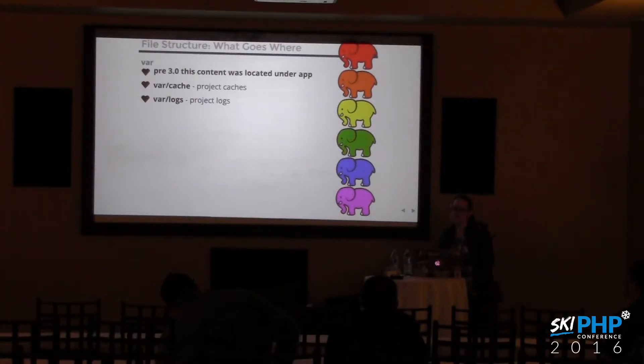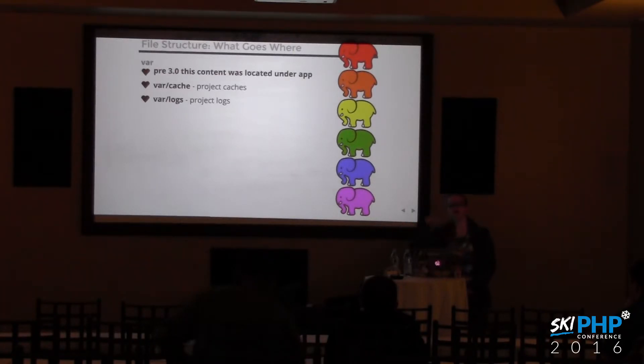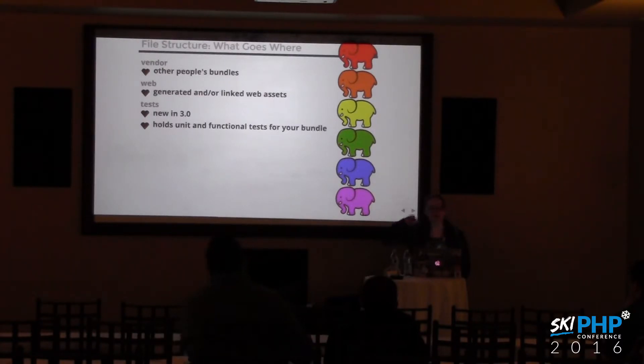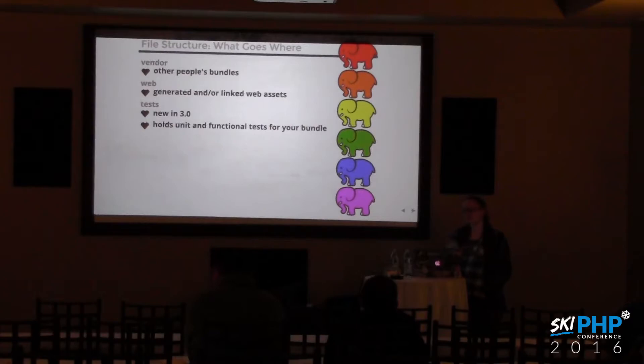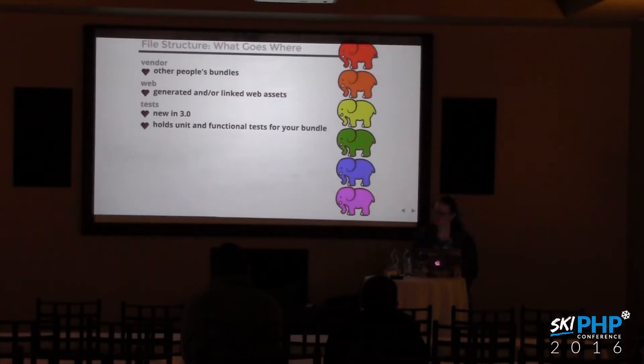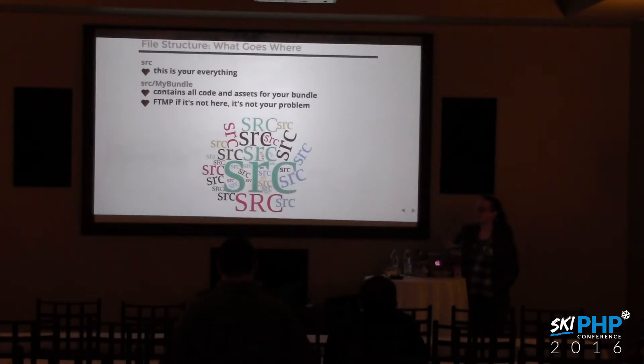In 'var' — also previously located under 'app' in pre-3.0 — this is now a new directory where the project stores its cache files and logs. 'Vendor' is where Composer installs other people's bundles. 'Web' is for generated or linked web assets. 'Tests', also new in 3.0, will hold unit and functional tests. But the important thing is the 'src' directory, because this is your everything — it contains all of the code and assets for your bundle.